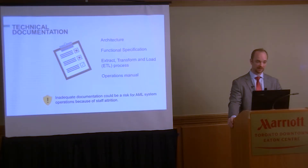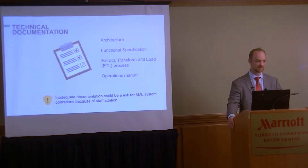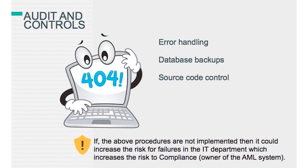The key takeaway here is that inadequate documentation could be a risk — really because of staff attrition. If the technology team built the system without documentation that someone else could take over, that is a risk for compliance, because technology isn't on the hook for the system — compliance is.